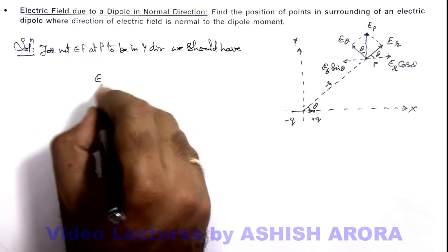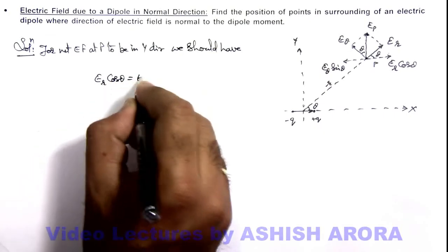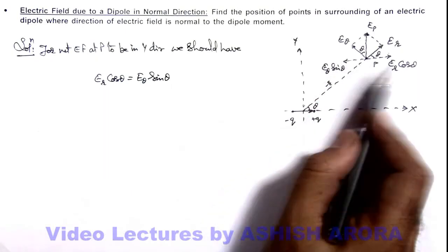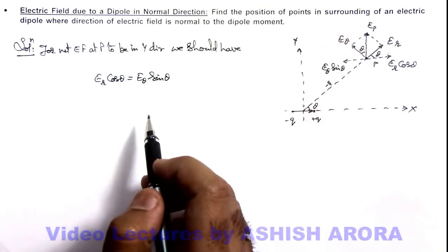Er cos theta equals to E theta sin theta, because only when the two horizontal components cancel each other, then only this electric field will exist.